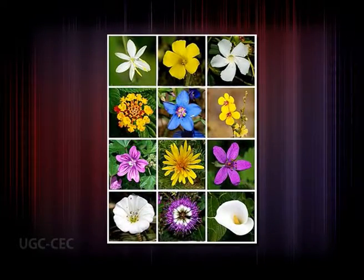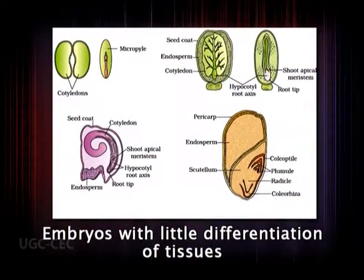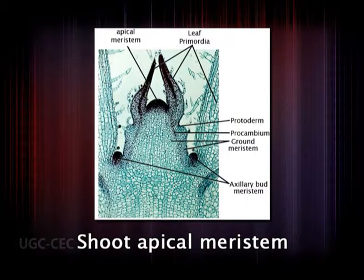Although all plant parts are produced from a simple structure called the embryo, the embryo has a limited number of parts — frequently only an axis bearing one or two cotyledons — with a low level of cellular and tissue differentiation. However, the embryo has a potentiality for further growth because of the presence of apical meristems at two opposite ends, which form the future shoot and root.